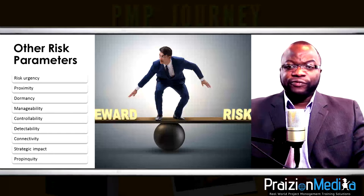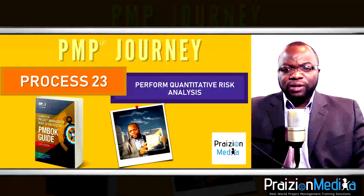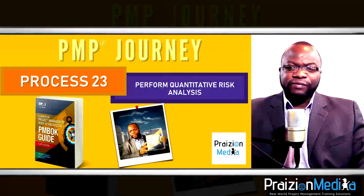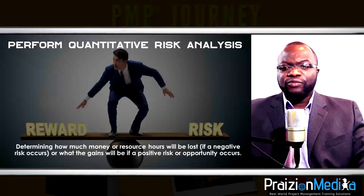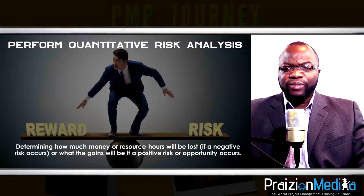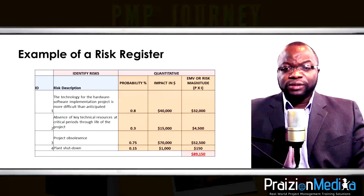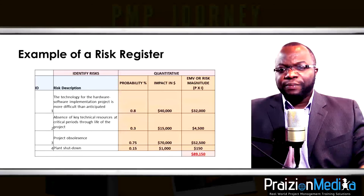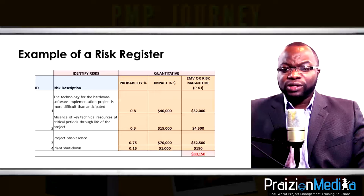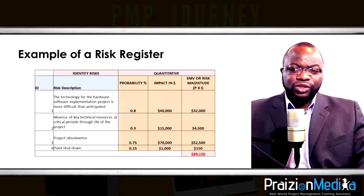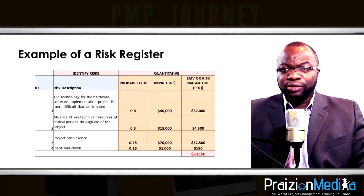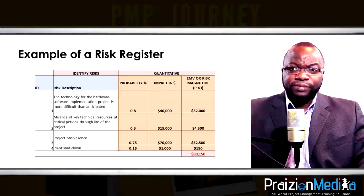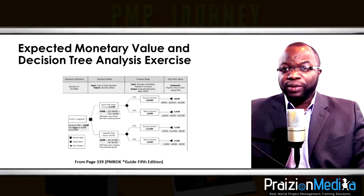Process 23: Perform quantitative risk analysis. This is where you quantitatively analyze risk from a dollar or resource-hour perspective. Typically it's probability times impact — probability as a best guess or expert judgment — times the dollar impact, giving you the risk magnitude or expected monetary value (EMV). EMV equals risk probability times risk impact.